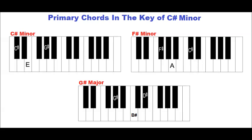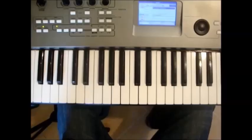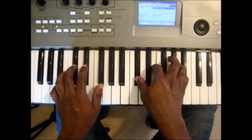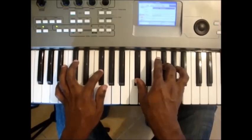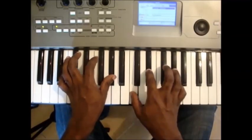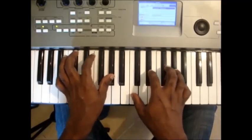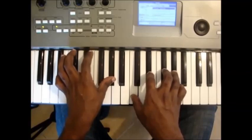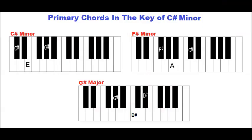The primary chords in the key of C-sharp minor are C-sharp minor, F-sharp minor, and G-sharp major. Or you can play G-sharp 7.